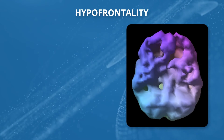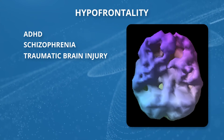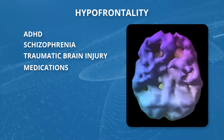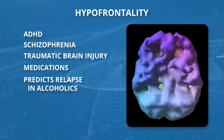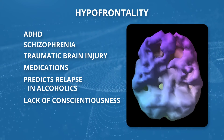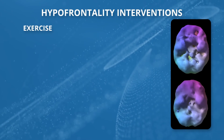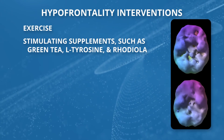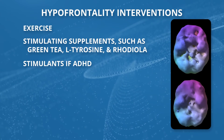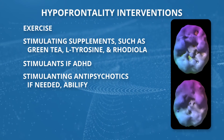So you have hyperfrontality and hypofrontality — low activity in the frontal lobes — classically seen with ADHD, but also schizophrenia, traumatic brain injury, and certain medications. Low frontal lobe activity predicts relapse in alcoholics and is associated with a lack of conscientiousness and forward thinking. We also see it in some forms of depression. If it's low, we want to stimulate it with exercise, stimulating supplements such as green tea, L-tyrosine, rhodiola, a stimulant like Ritalin or Adderall for ADHD, Abilify if there's a psychotic process, or a stimulating antidepressant if there's depression.